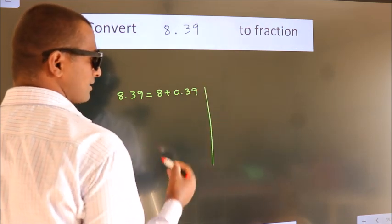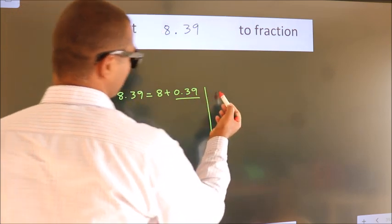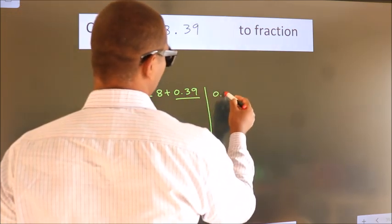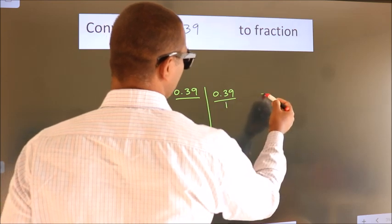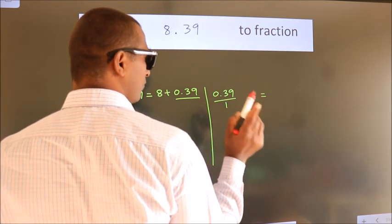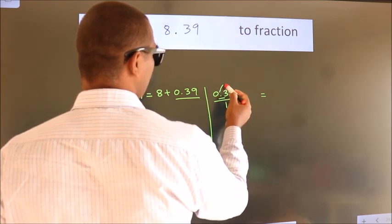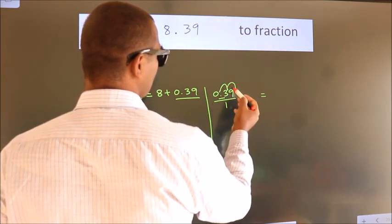Next, convert this to fraction. So 0.39, to convert this to fraction, we have to move this decimal after 1, 2 numbers.